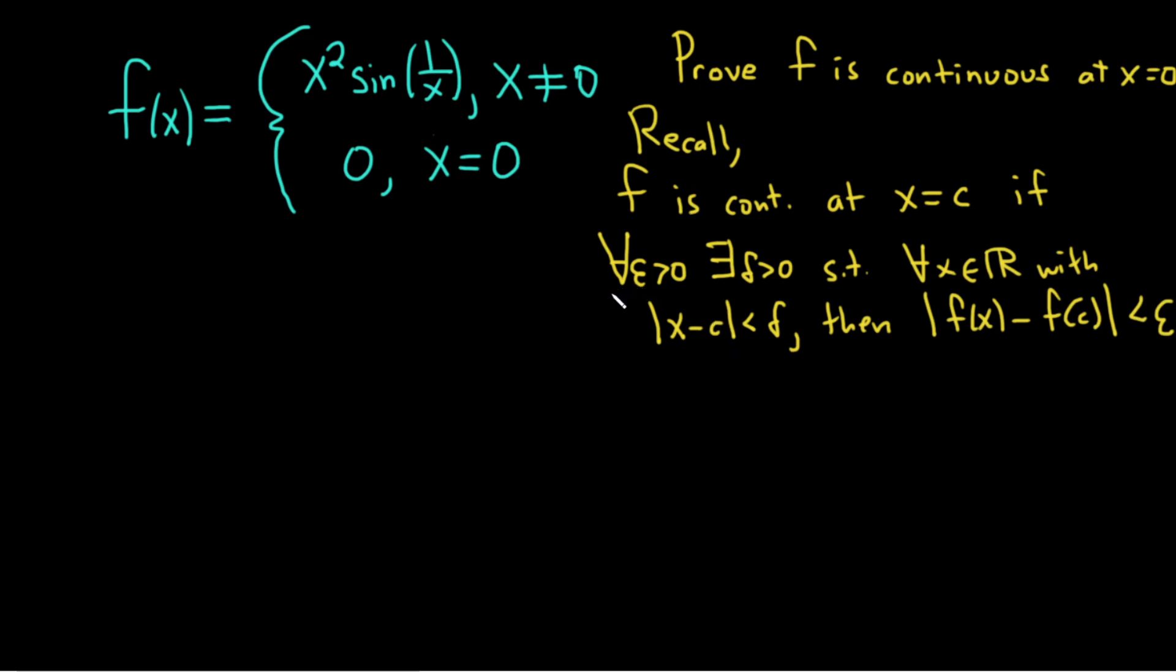This basically says for every epsilon greater than 0, so this upside down a means for all, this backwards e means there exists a delta greater than 0, such that for every real number x with this condition here,